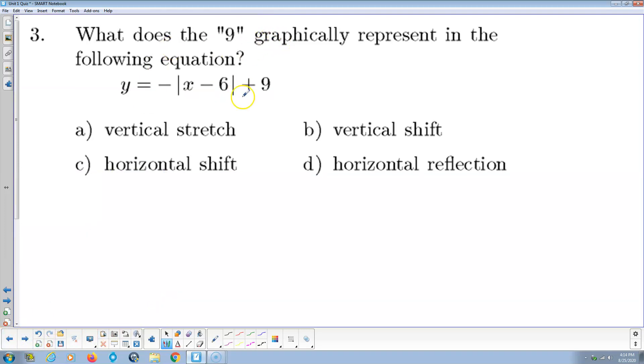What does the nine graphically represent? Well, the mother function here is absolute value. The adding of the nine is on the outside, so that's going to be a vertical transformation, and adding is always a shift, so answer B, a vertical shift.